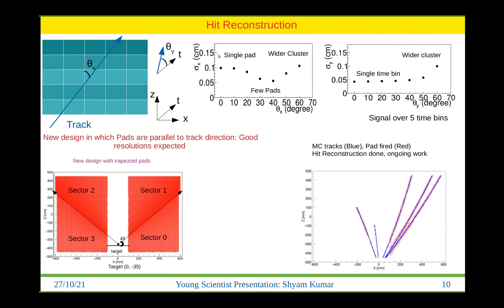At small angles the whole track is inside a single pad, so we can't reconstruct well. At a slightly larger angle we have a few pads fired and can reconstruct position using charges, improving resolution. At very large angles we get very wide clusters and the resolution degrades again. So we want to omit the large-angle region and always have tracks at near-zero angles relative to the pads.